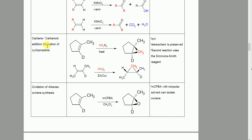Then we have the carbene-carbinoid addition — the formation of cyclopropane. You don't need to know the mechanism, but all you need to know is that I'm going to form this triangle-like cyclic structure whenever I have CH2N2 or CHI2. You need to know the reagents that go with each of these reactions, but ultimately they produce the same thing: a CH2 in a triangle-like cyclopropane form.